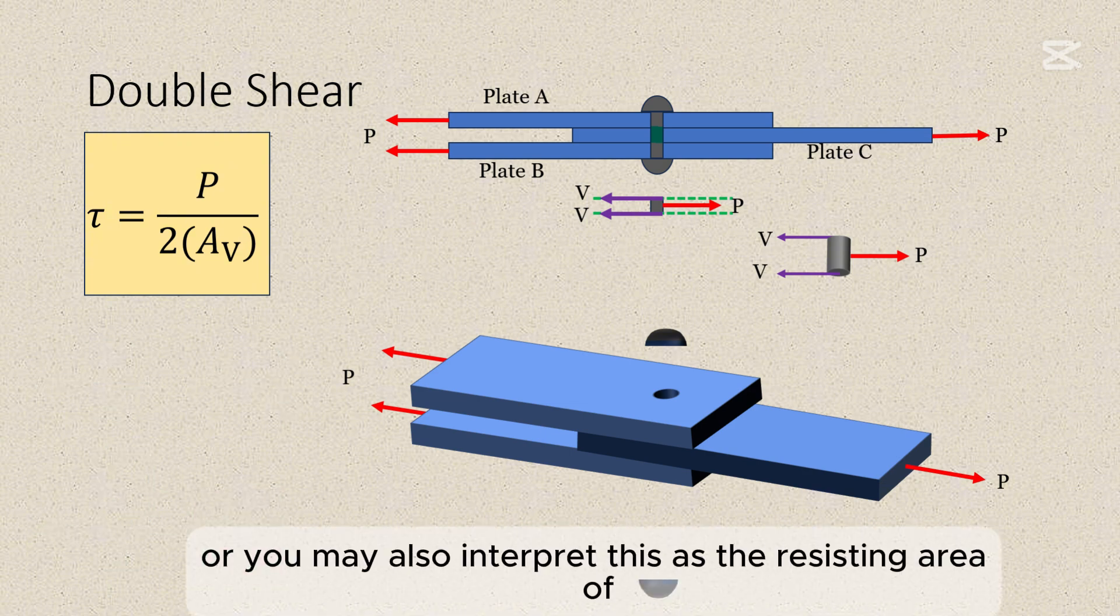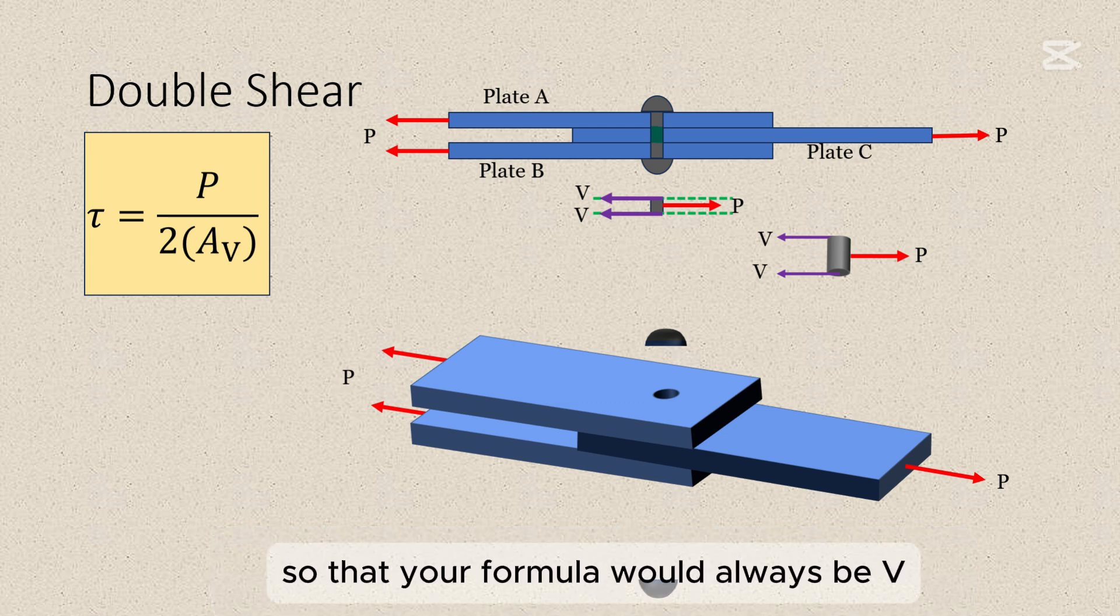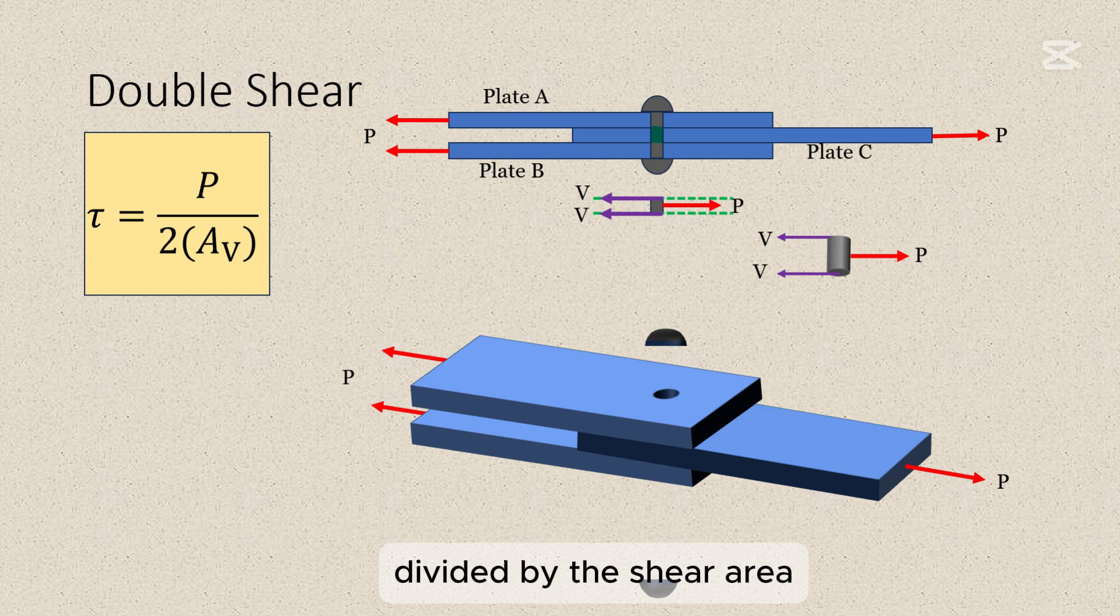Or you may also interpret this as the resisting area of shear is two areas, the top one and the bottom one. So that your formula would always be V divided by the shear area. That's more intuitive.